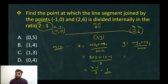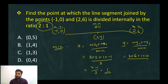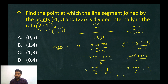For y: y equals m times y2 plus n times y1 divided by m plus n. So y equals 2 times 6 plus 1 times 0 divided by 3, which is 12 divided by 3, giving y equals 4.